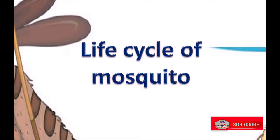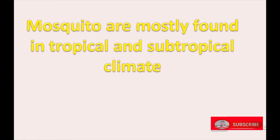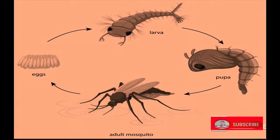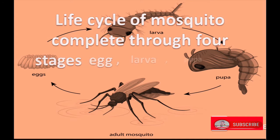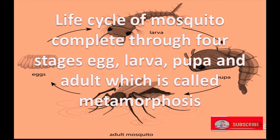Life cycle of mosquito. Mosquitoes are mostly found in tropical and subtropical climates. The life cycle of a mosquito completes through four stages: egg, larva, pupa, and adult, which is called metamorphosis.